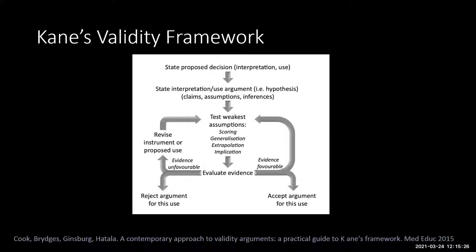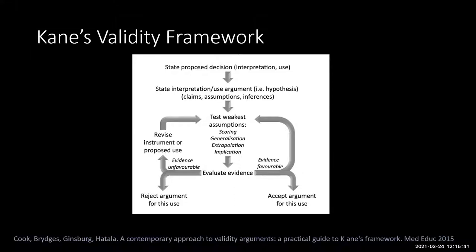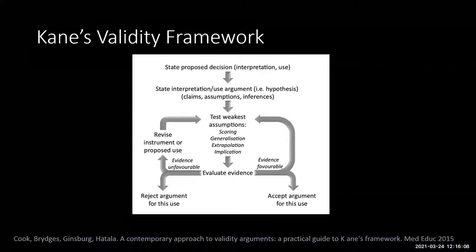A scale or instrument is never valid in and of itself — it's valid for a particular use, and you have to be clear about that. For example, using an end-of-rotation rating form for something very high stakes means you have to focus on scoring, generalization, extrapolation, and especially the implications of your decision. Whereas if you're using it for formative assessment or feedback, the implications inference doesn't have to be as strong. So you collect different types of evidence depending on what you're going to use your forms for.